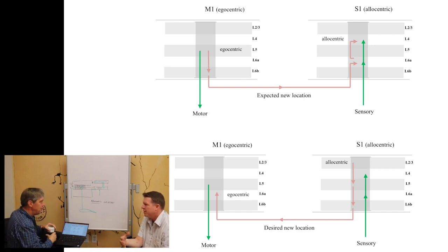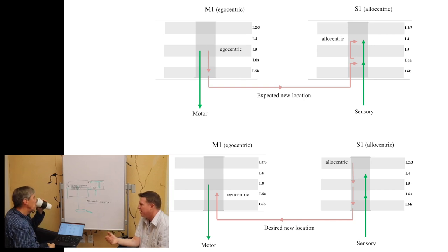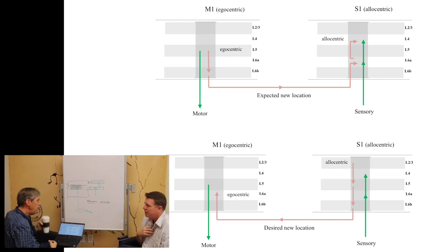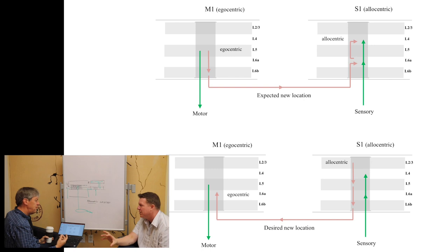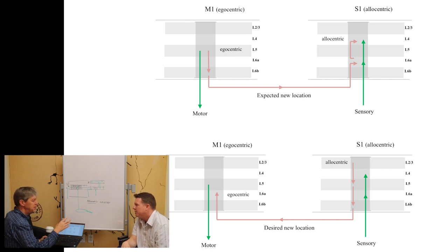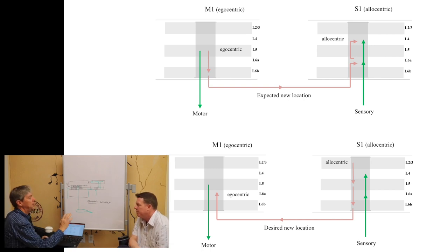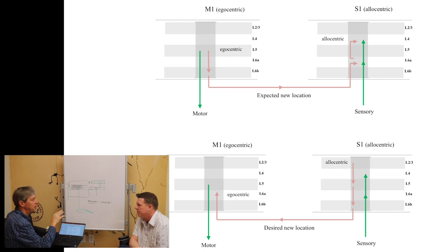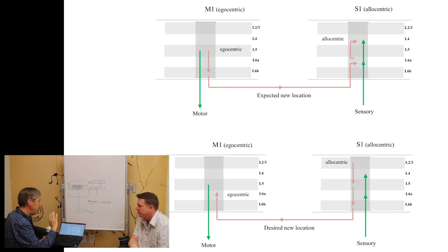So every object you're looking at, you've got these dual representations: you and your relation to it, versus the object and its own representation. What's become clear to us is that the cortex is infused with this everywhere. These conversions between reference frames are going on all the time, in all the senses.